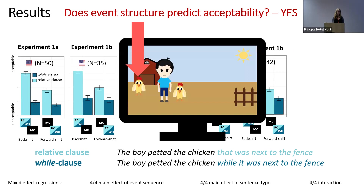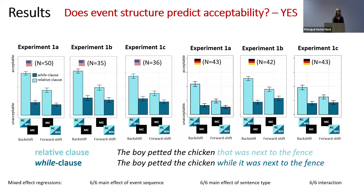We also always included a second character referent in our videos. Another alternative explanation could be that to identify the right referent, participants thought the relative clause description needed to be true at the time of the matrix clause event — which is not the case for forward shifts. We ran another version without the second character and again found our pattern of results, excluding this alternative explanation. Notably, participants generally rated event sequences higher where the relative clause was ordered first.